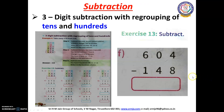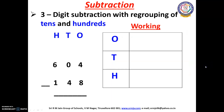Now let us see one more example. It is exercise 13F. First we have to check the symbol. Here we have the subtraction symbol. So we are going to subtract 148 from 604.